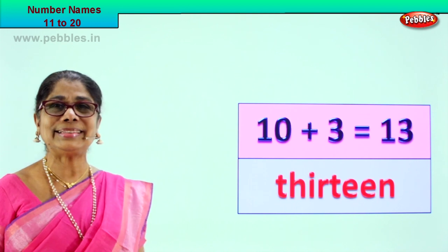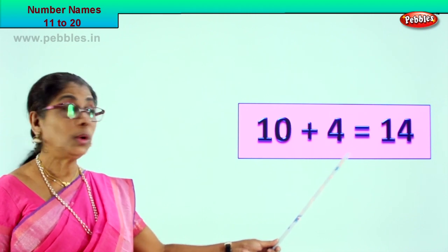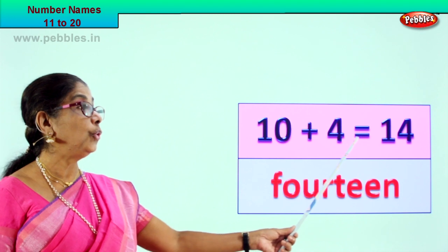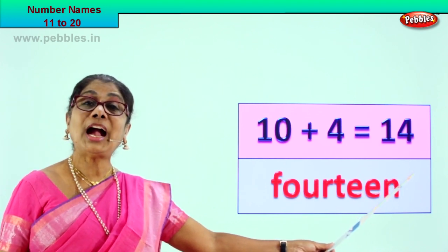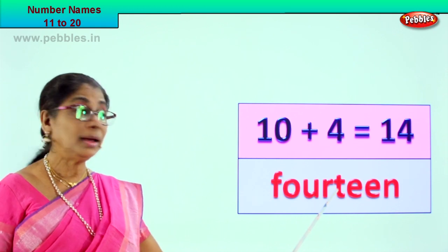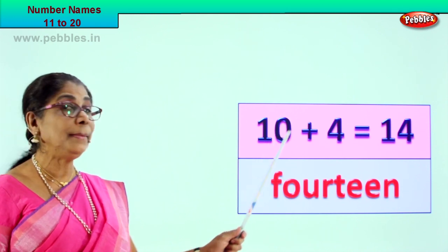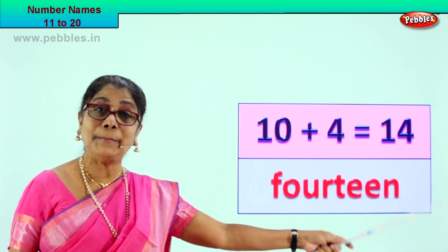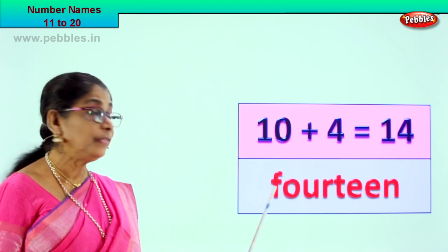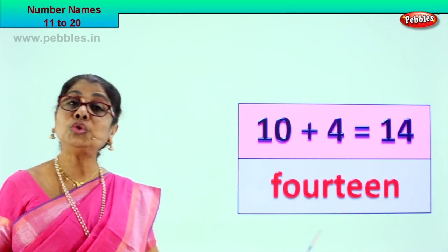Let's go to our next exercise. Look what we have. 10 plus 4 is equal to 14. Read it again for me — 10 plus 4 is equal to 14. How do we write 14? We write 14 as F, O, U, R, T, E, E, N. 14 in words. What is 10 plus 4 is equal to 14? And in words we learn 14 — how to spell and write the number. Spell it again: F, O, U, R, T, E, E, N. 14.